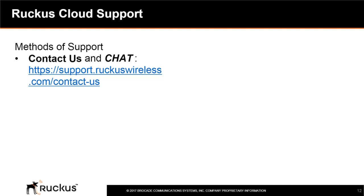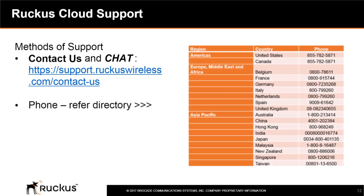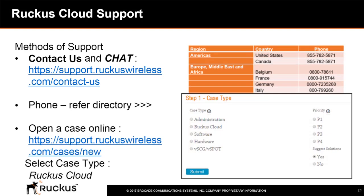You can contact support by going to https://support.ruckuswireless.com. Here you can use chat to talk with a support person, use the phone directory to get the correct support phone number for your area, or open a case online.